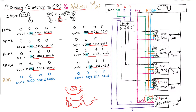So this is how a memory map for CPU can be created and how memory can be connected with the CPU. In the next tutorial, we will discuss auxiliary memory and then begin our discussion on associative memory. Thank you.